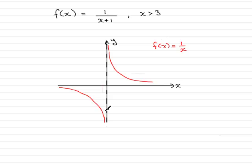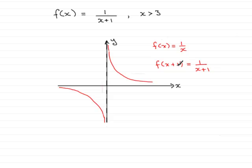What I'm going to do next is to replace the x with x plus 1. So in other words, what we've got here is a new graph: f of x plus 1, which is going to be equal to 1 over x plus 1. And what effect does this have on the original graph? Whenever you add 1 to x like this, the graph translates — that is, it slides to the left 1 unit.